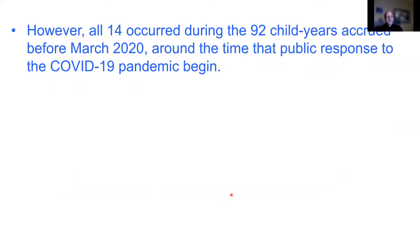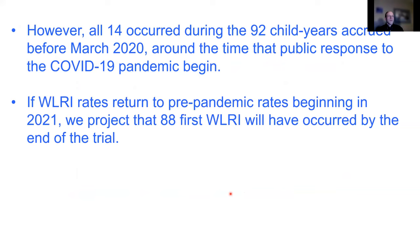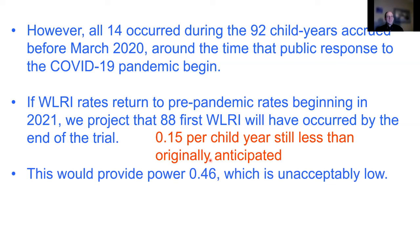All 14 events occurred during the 92 child years accrued before March 2020 — there were no wheezing episodes between March 2020 and September 2020 because of children staying home from school and daycare. If WLRI rates were to return to pre-pandemic rates beginning in 2021, we would project only 88 first events by the end of the trial. We needed 225 events for 85% power. Power would only be 0.46 — 46% power is unacceptably low. That study is not fundable; it's futile or infeasible.